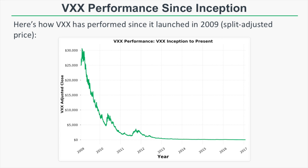Since we know VXX performs poorly when the VIX futures are in contango, let's take a look at how VXX has performed since it launched in 2009. In this graph, we're looking at the split adjusted price of VXX from January 2009 all the way until present day. VXX's split adjusted price going all the way back to its inception date comes out to around $25,000. As I'm recording this, VXX is trading right around $15, which means since its inception date, VXX has lost more than 99% of its value. That's because the VIX futures are frequently in contango, and when the VIX futures are in contango over prolonged periods of time, those near-term VIX futures steadily lose value as they converge towards the VIX index, which leads to poor performance in VXX.